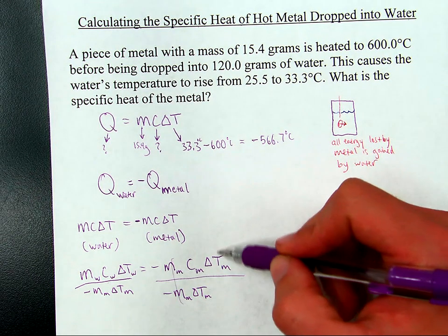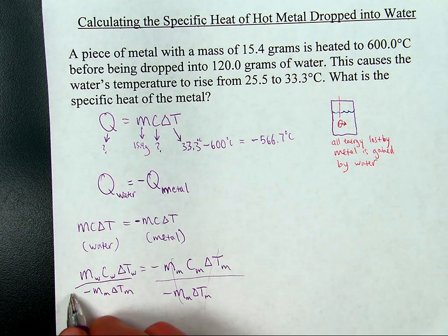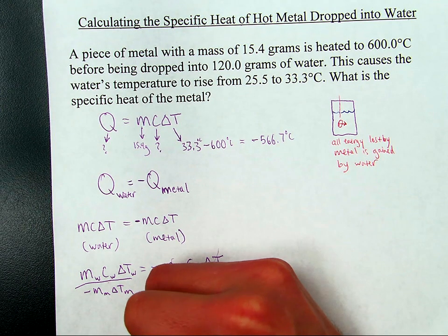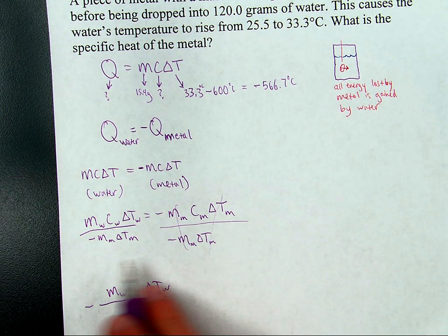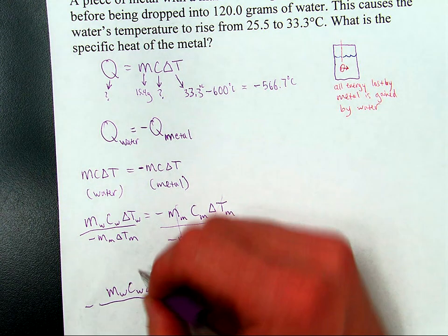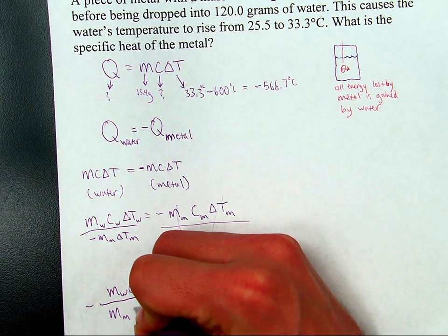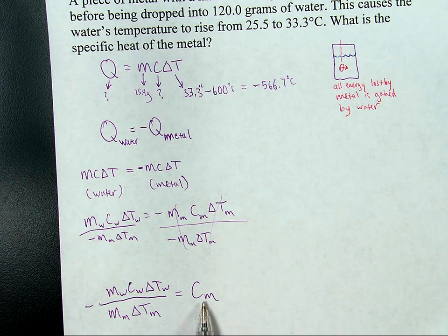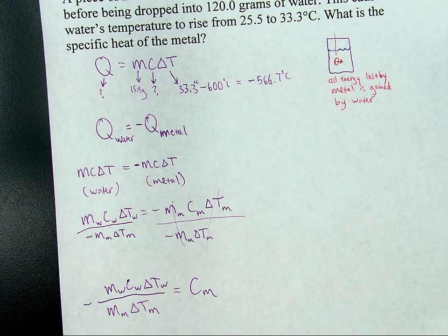Which means that these then cancel out. And your final way of writing would be, mass of water, C of water, delta T of water. Put the negative sign. I just moved the negative sign over here for clarity. So there's mass of water, specific heat of water, delta T of water. And then on bottom, mass of metal, delta T of metal. And all that would be equal to the specific heat of metal. This is what I'm trying to find. And this is all the numbers and such that's going to allow me to find it.